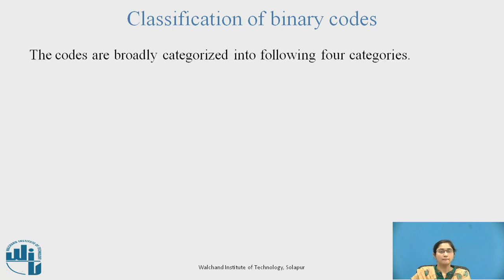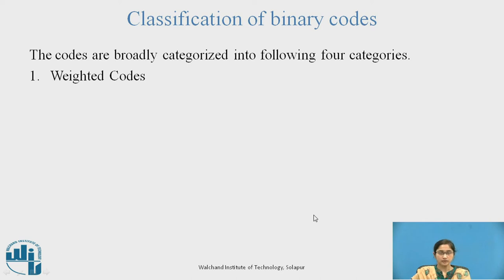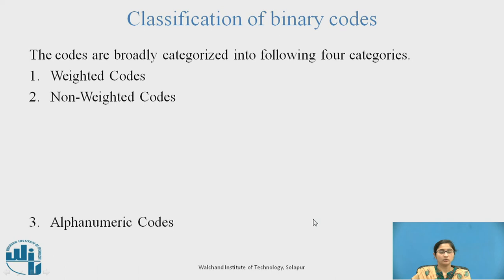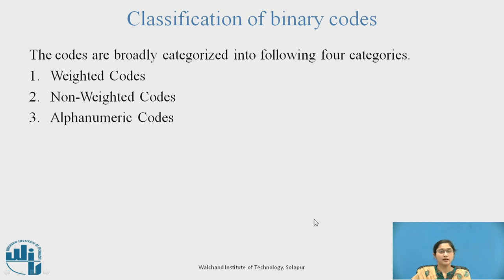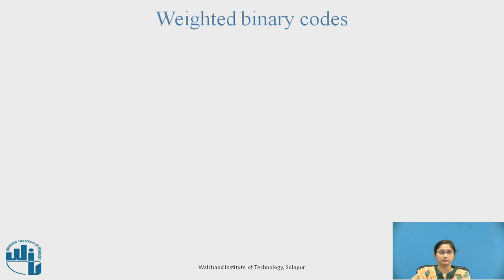Classification of Binary Codes. Codes are broadly categorized into the following four categories: 1. Weighted code, 2. Non-weighted code, 3. Alphanumeric code, and 4. Error detecting and correcting code.